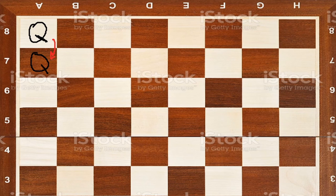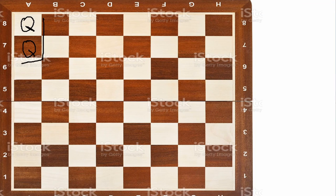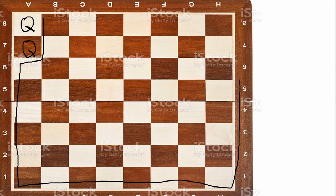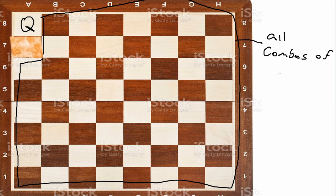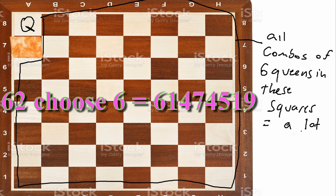Notice, however, that these queens are attacking each other and therefore the state can immediately be marked as invalid. So we backtrack and do not search further. This means we're effectively skipping every combination of the six remaining queens in the 62 remaining squares, which equates to over 60 million skipped states.